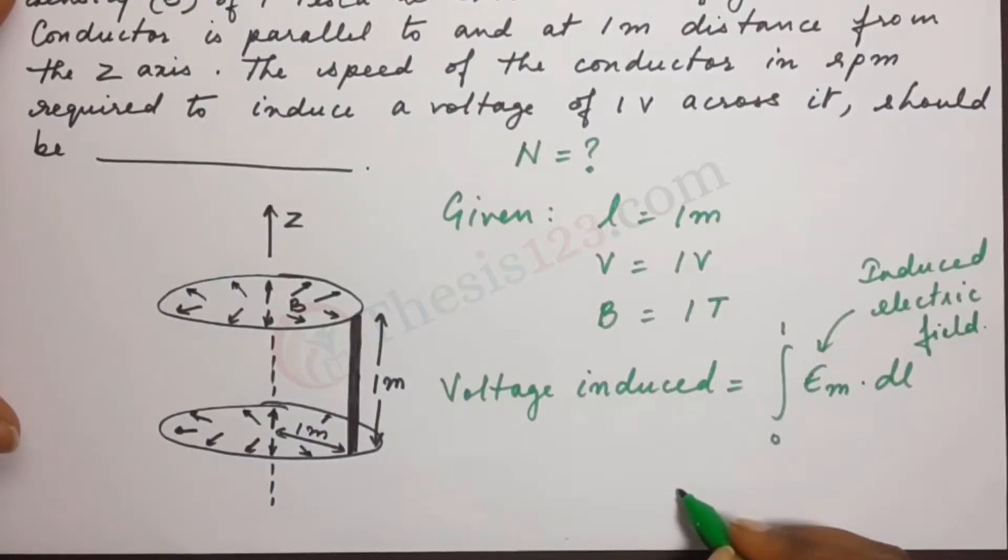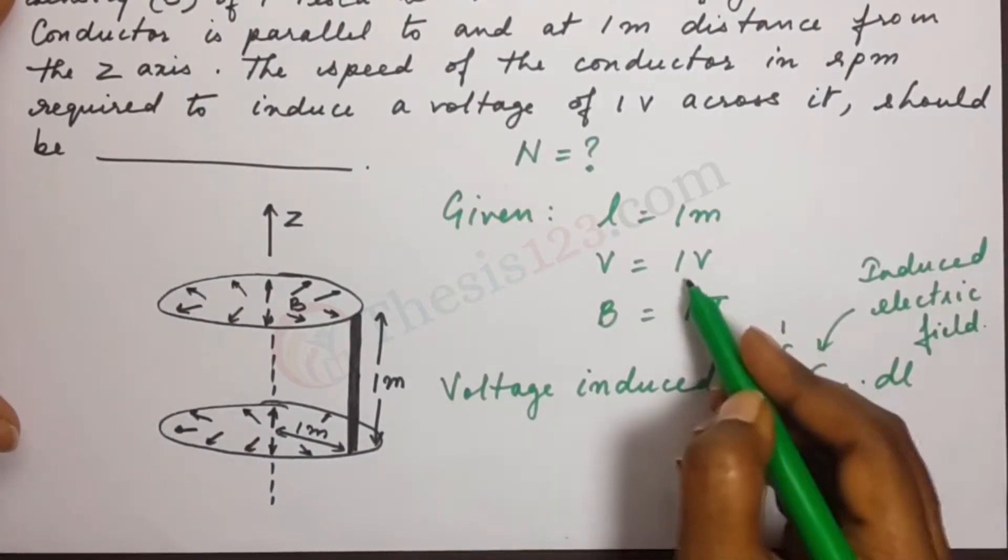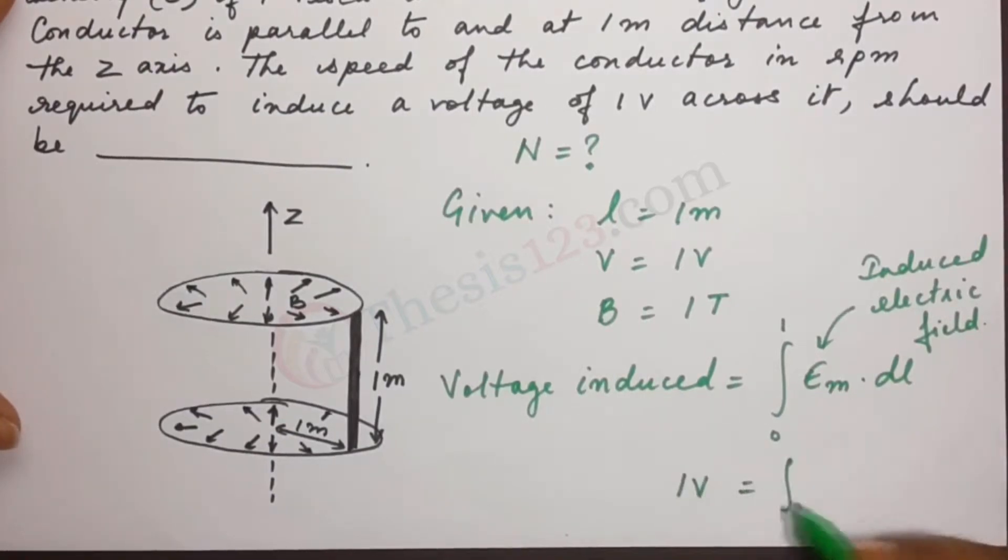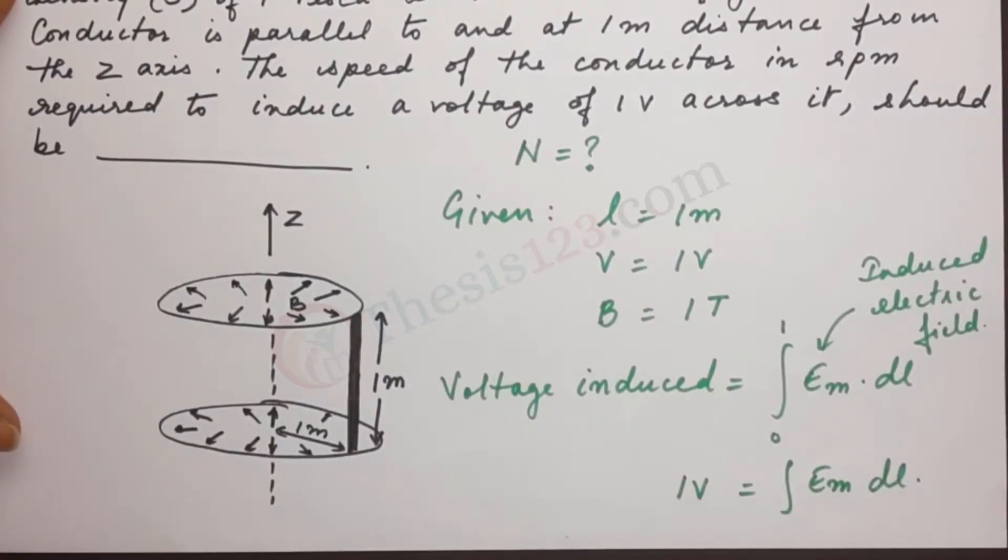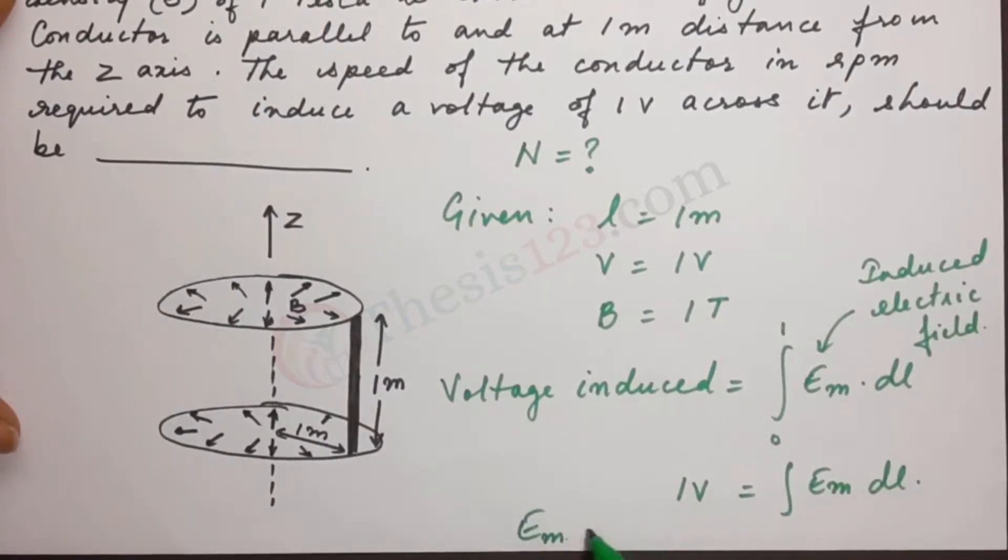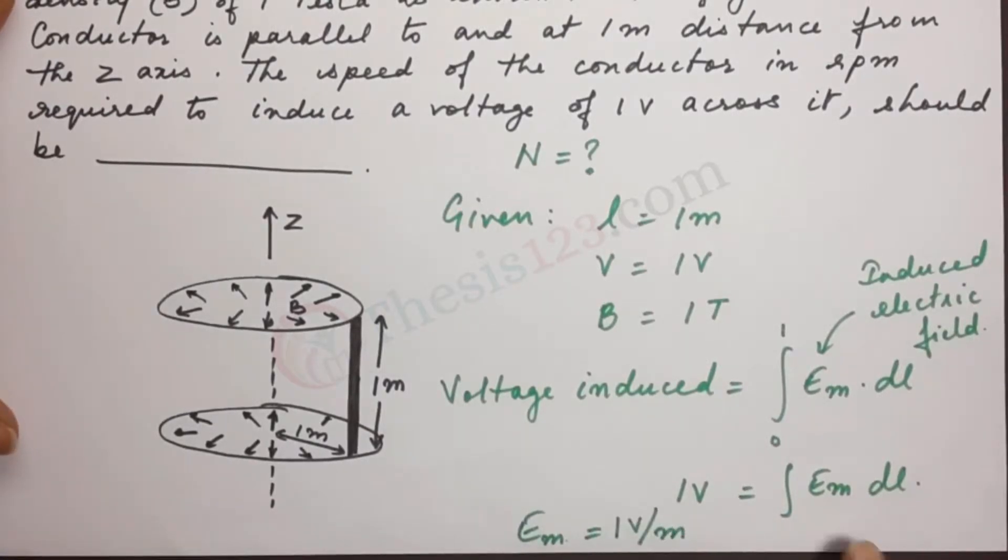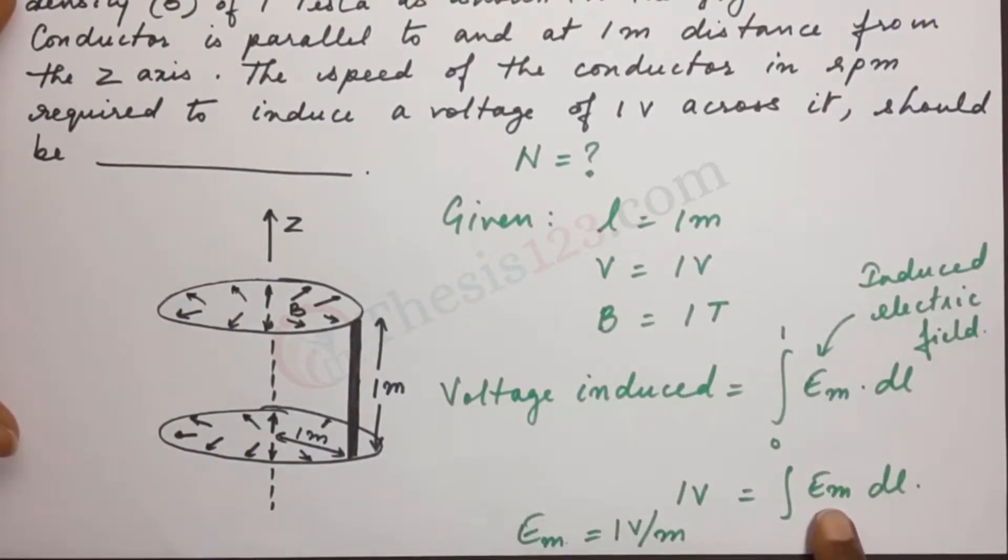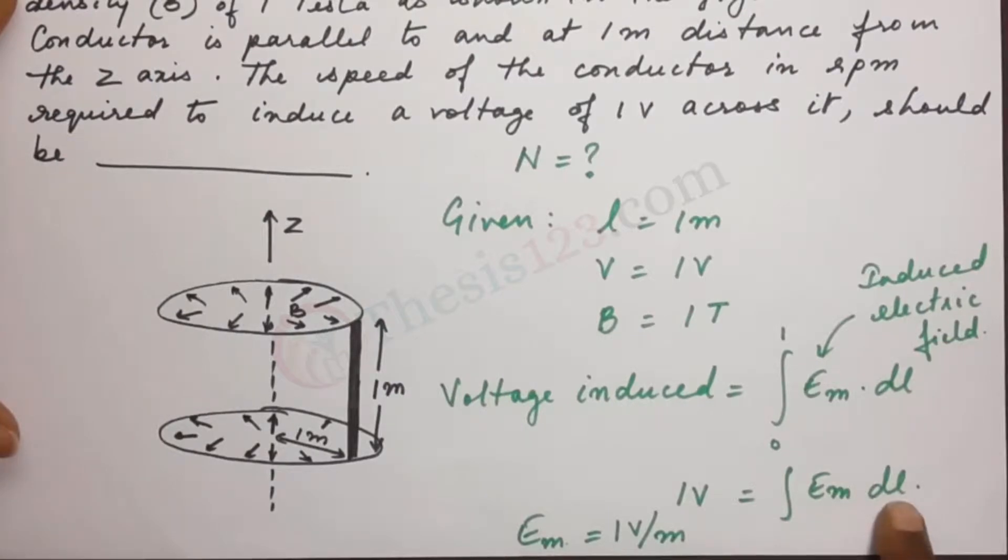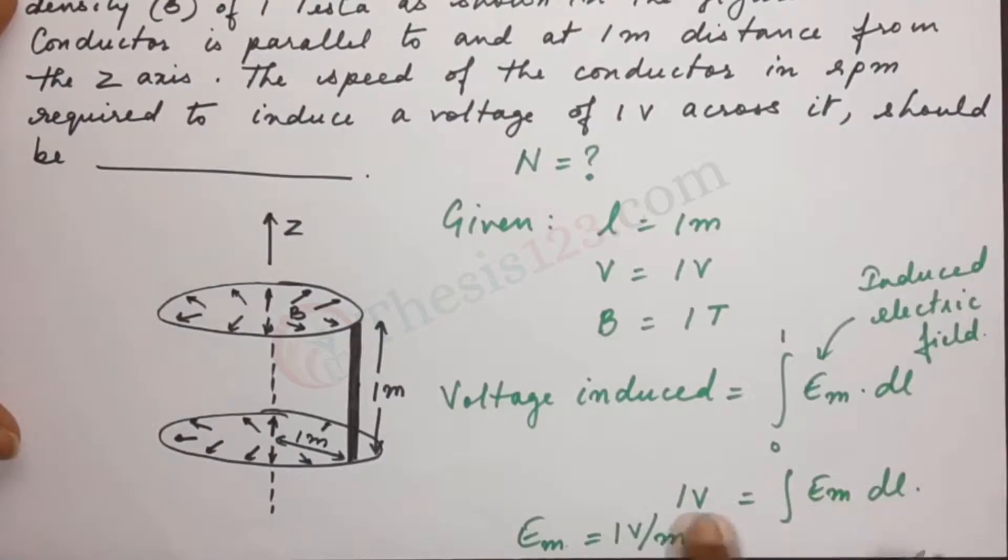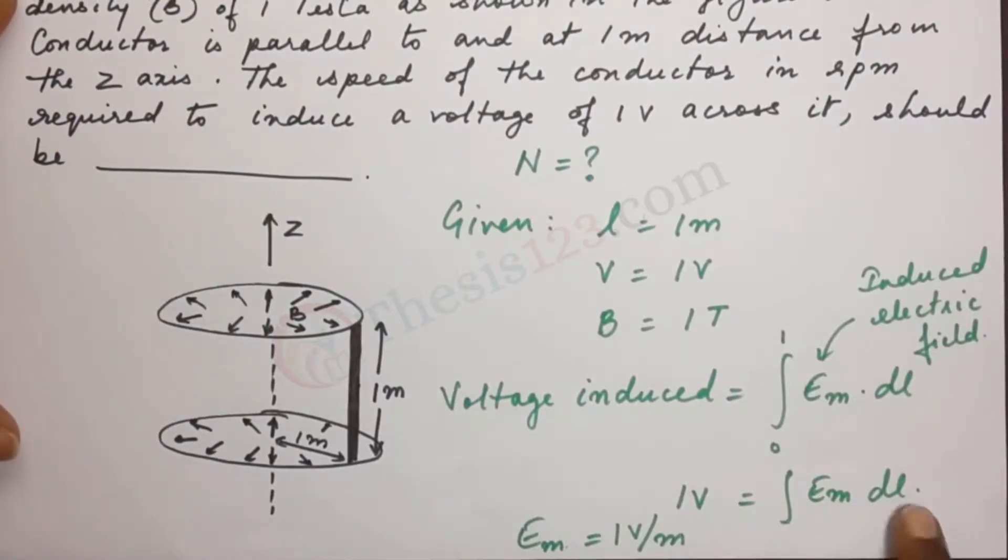So this gives us, now the voltage induced is one volt. So one volt equals the integral of E_m · dl. We can write the induced electric field as one volt per meter. Do you see that? If the induced voltage equals the integral of E_m · dl, this is in terms of the length, so we write E_m as one volt per meter.